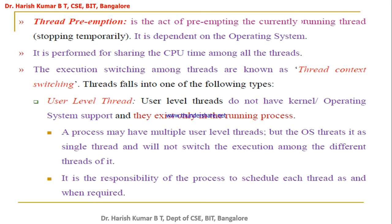Thread preemption is performed to give a fair chance to all other threads to execute. The switching of execution among threads is known as thread context switching. When the CPU switches from one thread to another, it's thread context switching; when it switches from one process to another, it's process context switching.